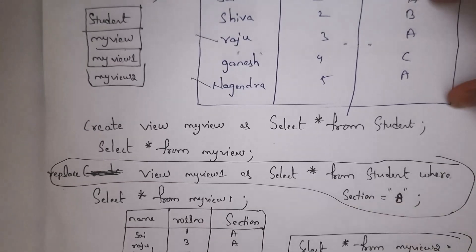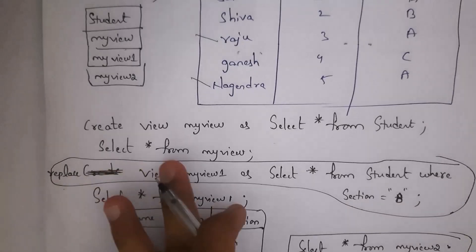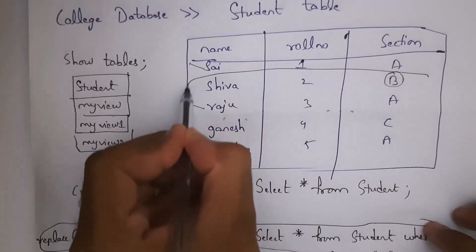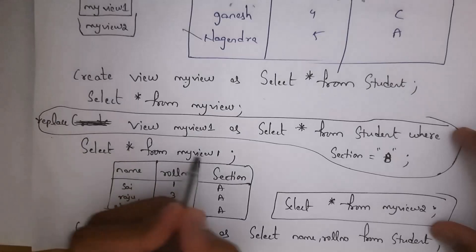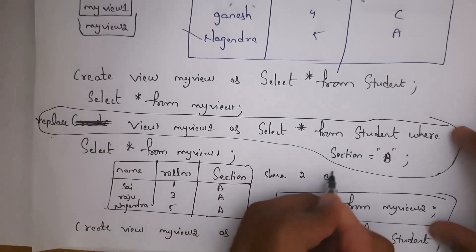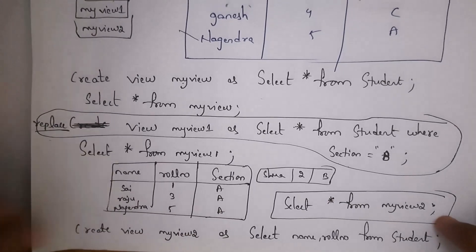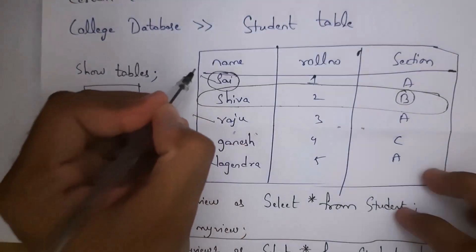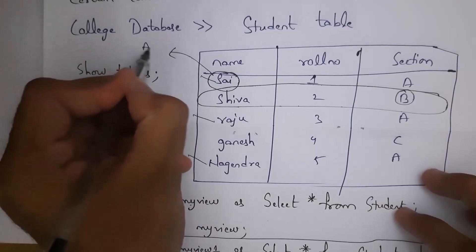Whenever you write this line of code and click enter, 'my_view_1' now contains only section B data. In this table only Shiva's section is B, so it will store Shiva, roll number 2, and section B. When you write SELECT * FROM my_view_1 it will display: name Shiva, roll number 2, section B. By using the REPLACE command we can update views.